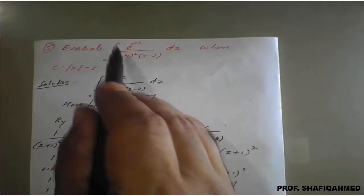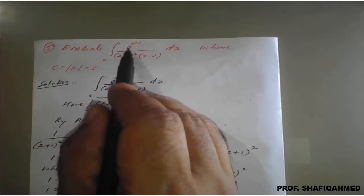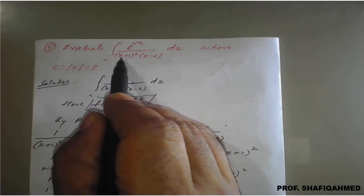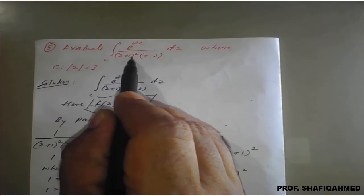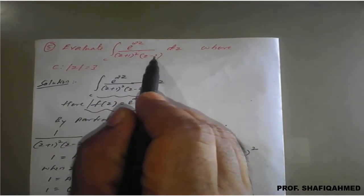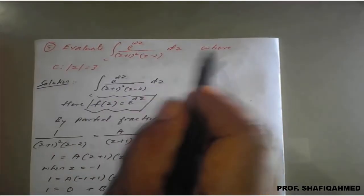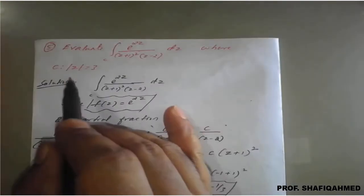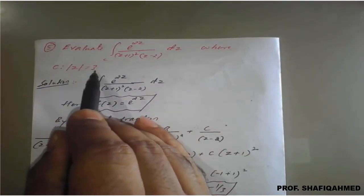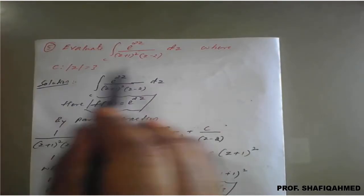For example, evaluate the integration of e raised to 2z upon (z plus 1) whole square into (z minus 2) dz with the circle mod z equal to 3.